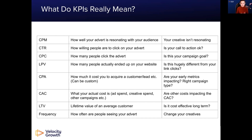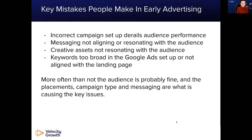Once you've chosen your platform and you're live in the mix, your KPIs can mean something in terms of what's going wrong and how to fix it. Key mistakes people make in early advertising: incorrect campaign setup derails audience performance; messaging not aligning or resonating with the audience; creative assets not resonating; keywords being too broad in Google Ads, or not aligned with a landing page. More often than not, the audience is probably fine — it's the placement, campaign, and structuring that causes issues. When picking a platform, make sure your campaign structure is going after the right KPIs for your business.